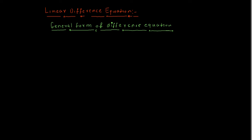What is the general form of a difference equation? We write the general form as: a0·y(x+n) + a1·y(x+n-1) + ... + an·y(x) = phi(x). This is equation number 1, and this is the general form of a difference equation.